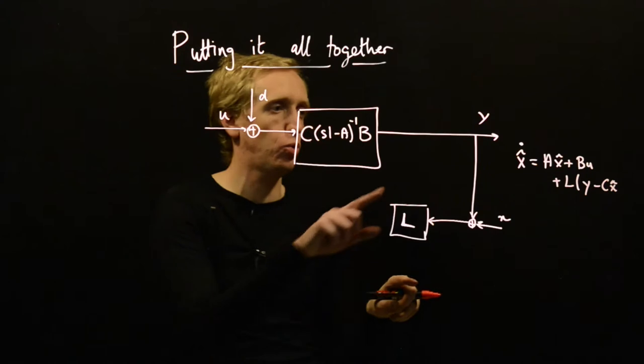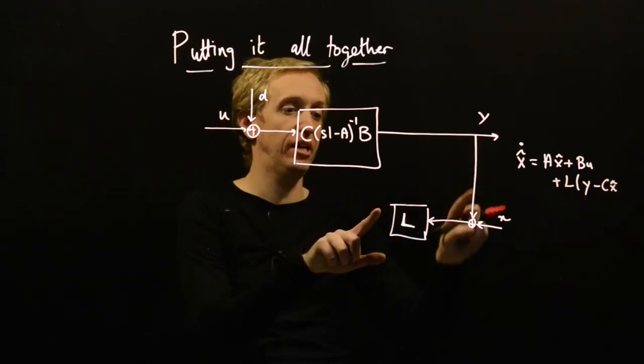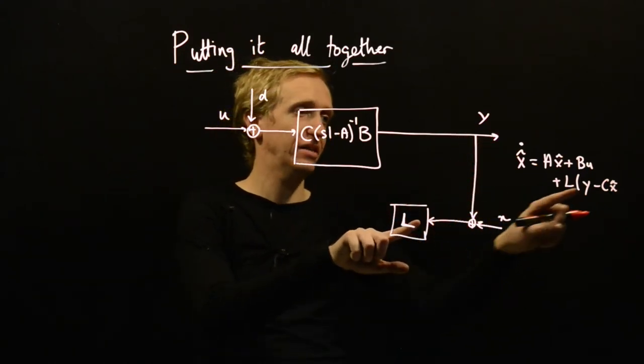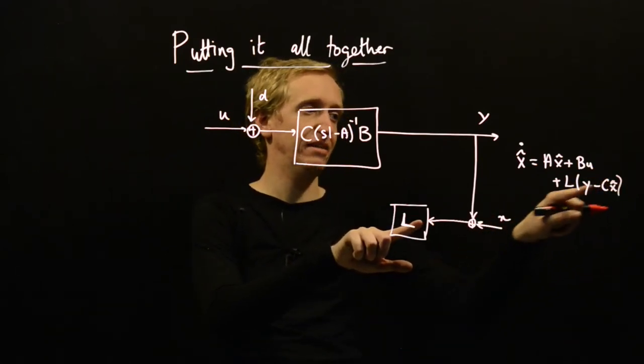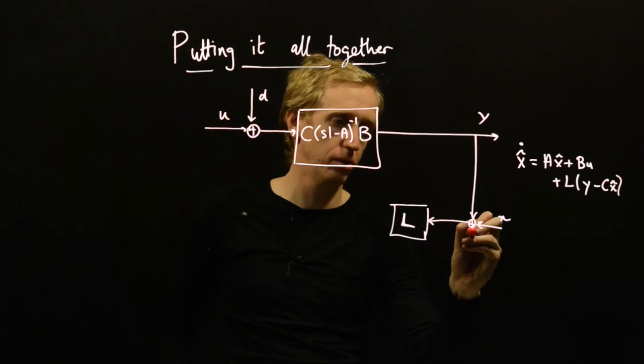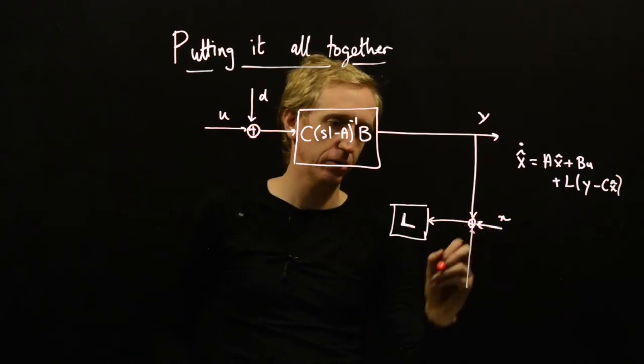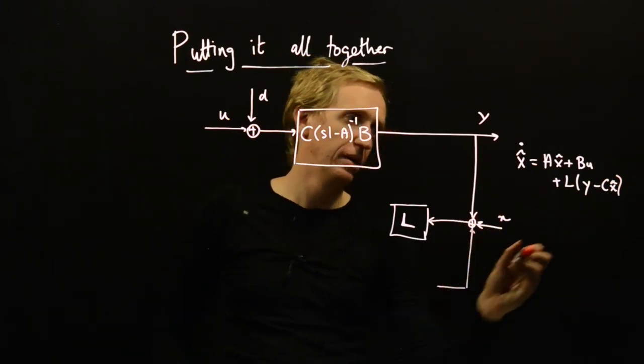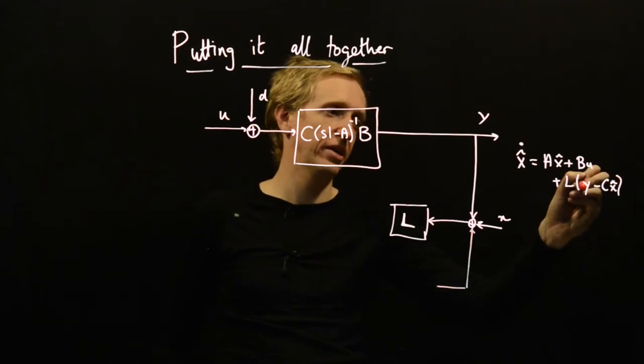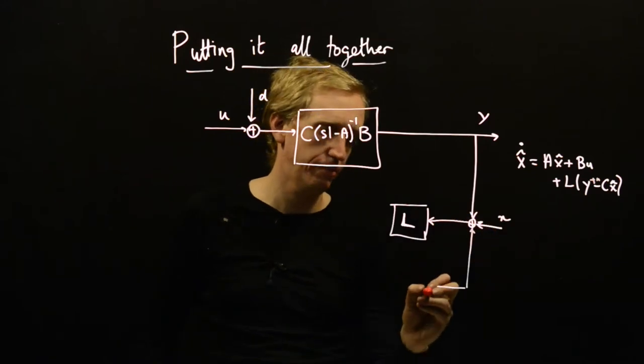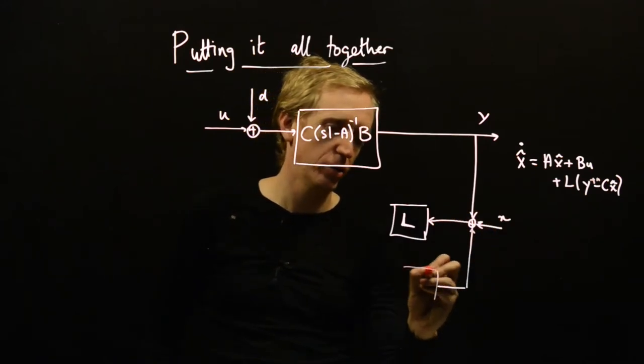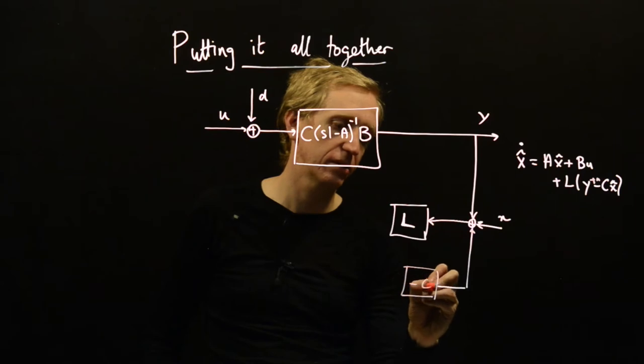So things are not quite right. We've got the Y feeding into our L, but we need it to actually be equal to Y minus CX hat. So we need something else coming in here. I've added in some sensor noise, so we never get Y, we get Y plus N. That's what's going on with this N here. And so we need minus C here.